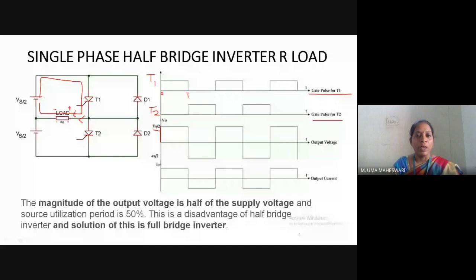During the on cycle of thyristor T1, the upper half voltage Vs/2 appears across the load. This is the output voltage waveform during the on cycle of thyristor T1, and the output current is Vs/2 divided by R.